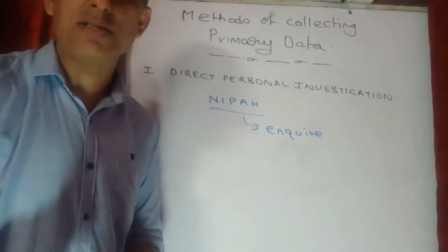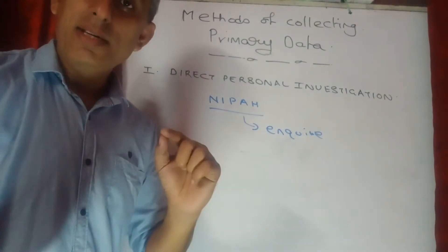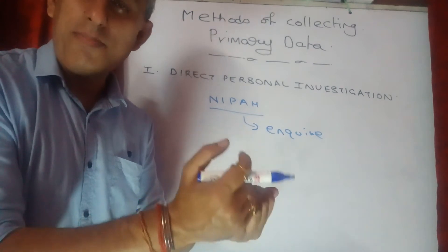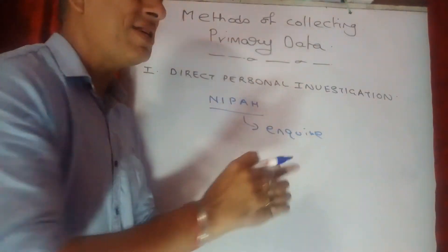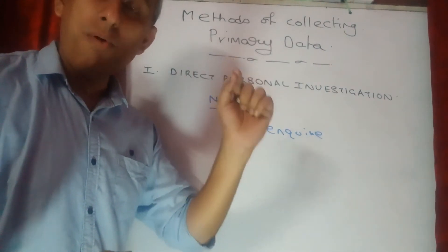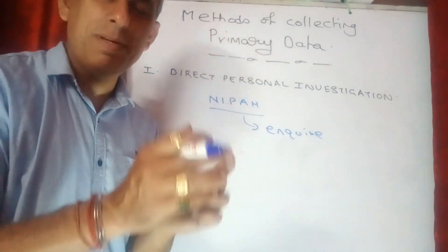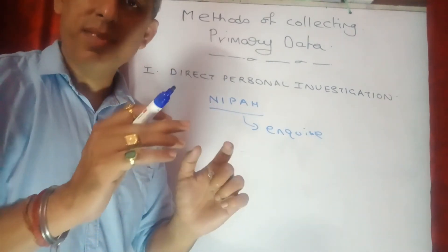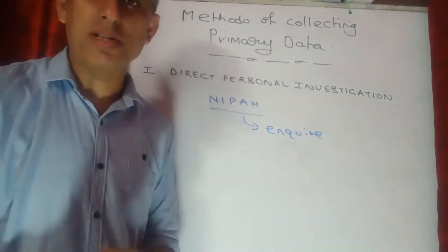This is primary data because it is originally collected — clear, first-hand information. But because it is collected through an interview by meeting the patient or their representative directly, it is called direct personal investigation. Unlike a phone call, here you can observe the body language of the person concerned, which helps you gauge whether correct and complete information is being provided.